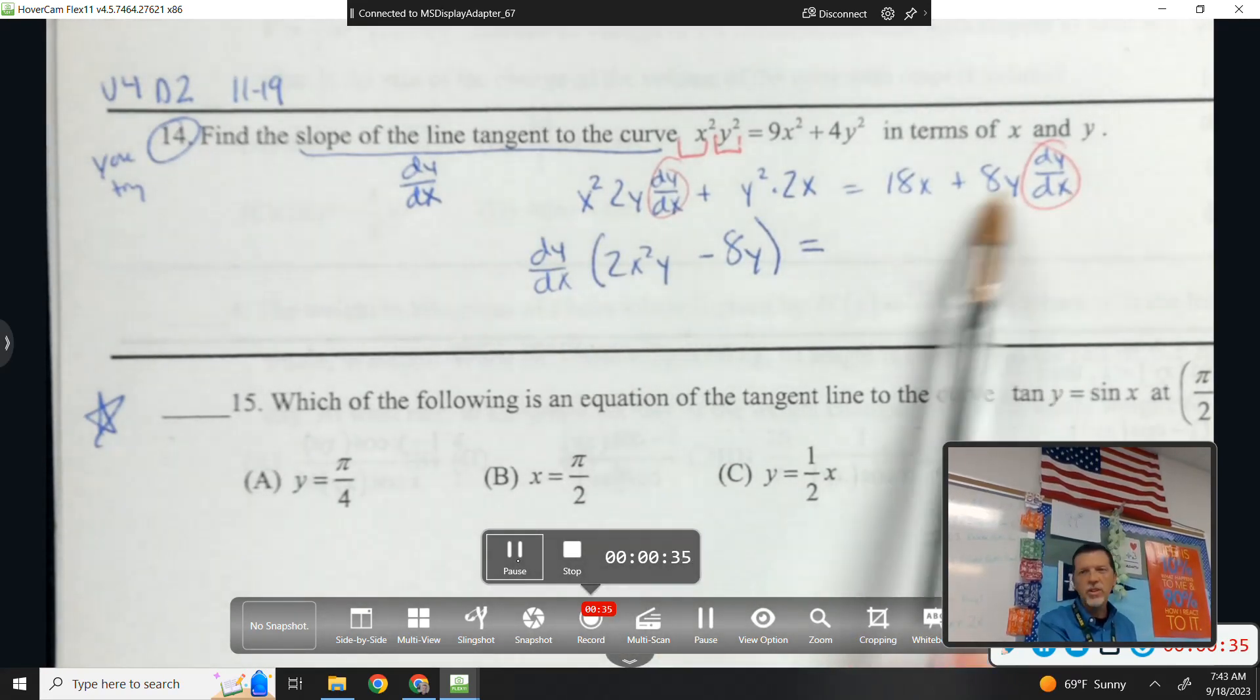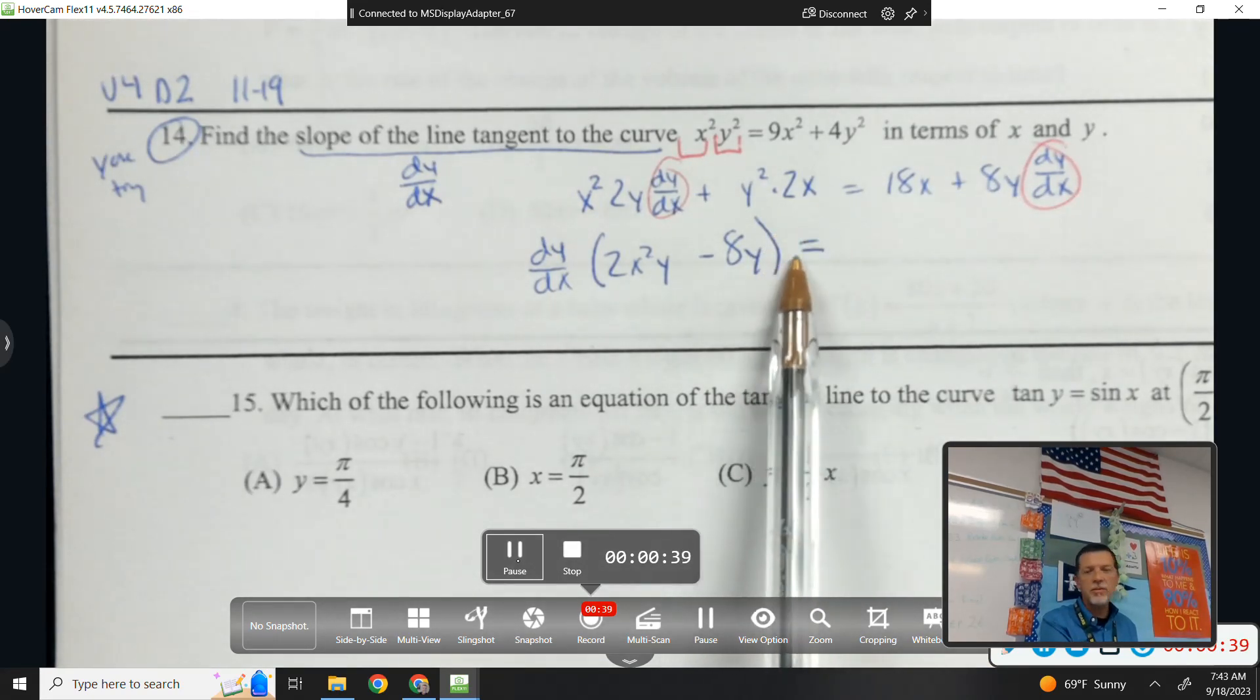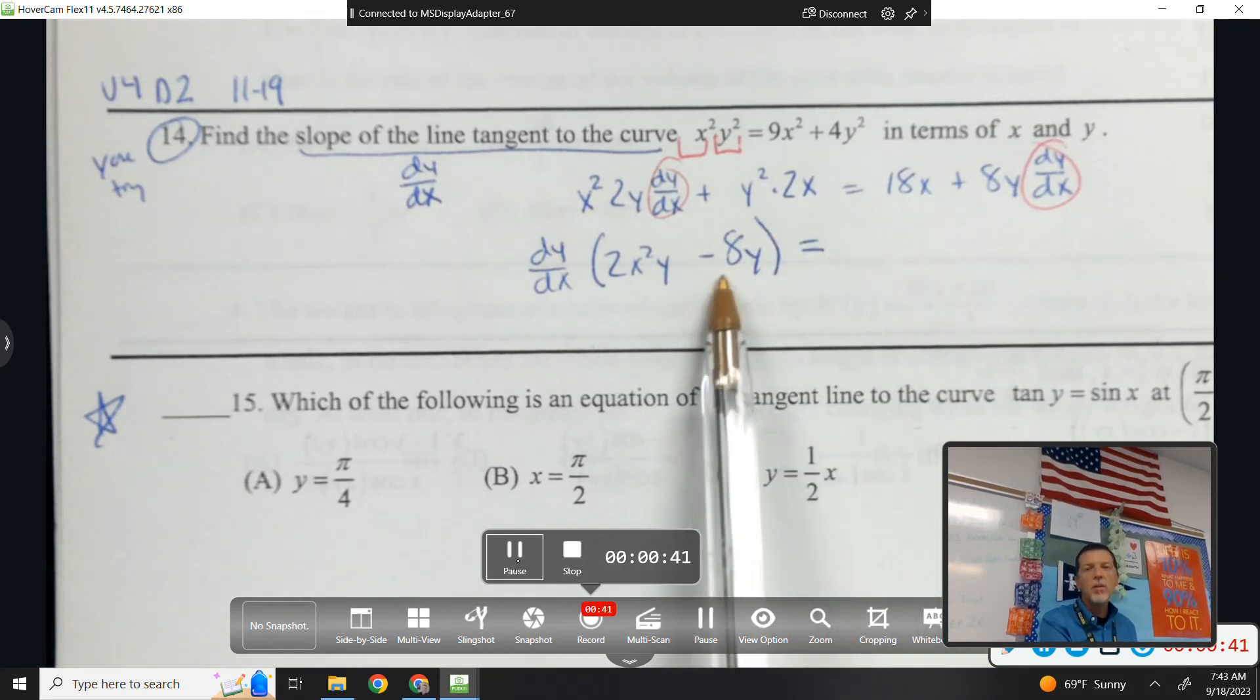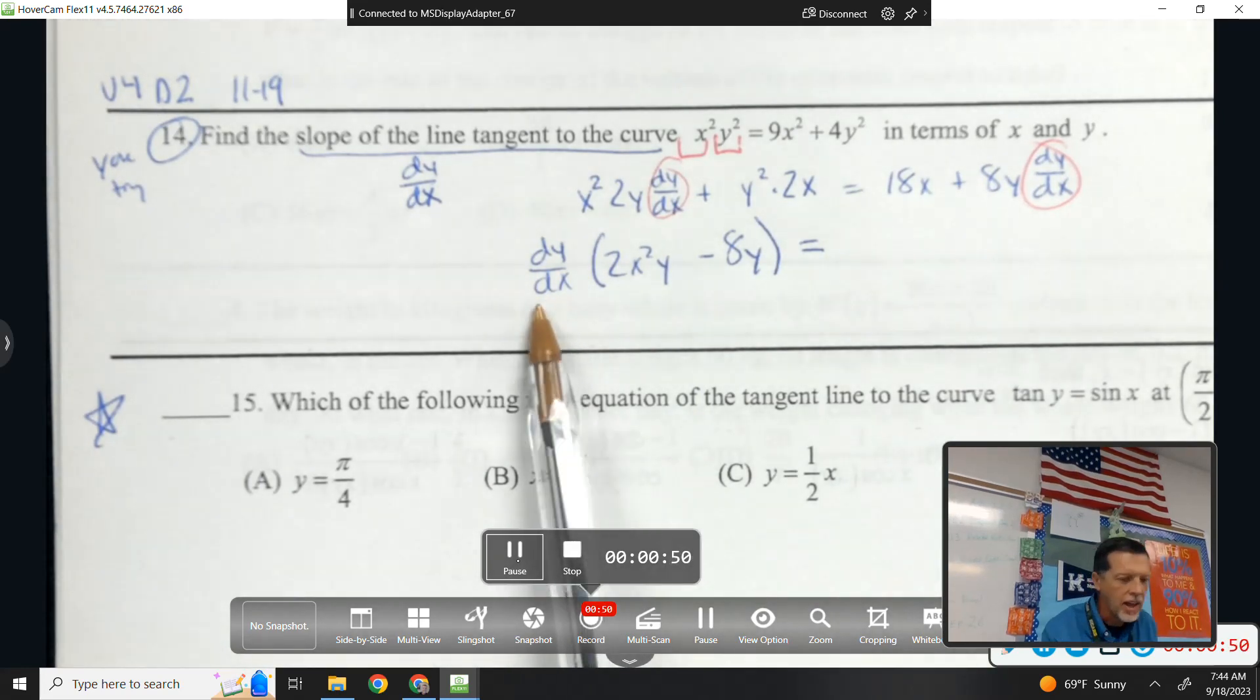Hopefully your algebra is good enough to skip a step or two at a time. You don't want to be flying through and skip too many, but you also don't want to take the time to write down every single step. So I move my dy/dx stuff over to the left and factor out a dy/dx.